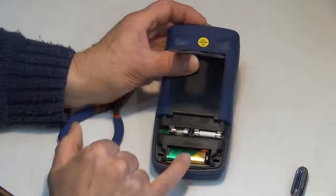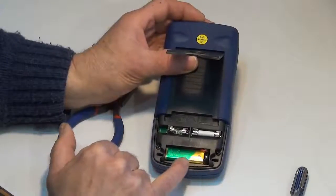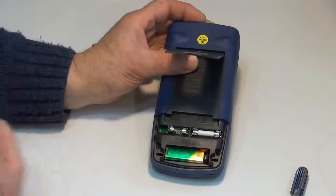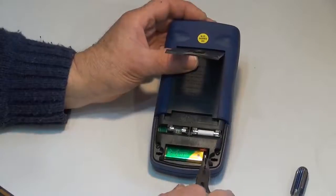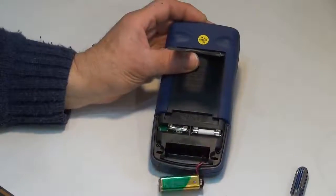Now often on digital multimeters and a lot of equipment, they'll have a little ribbon that you can use to pull out the battery. This one doesn't, so I'm going to use these needle nose pliers. I'm going to carefully grab onto the end of the battery clip and pull it out.